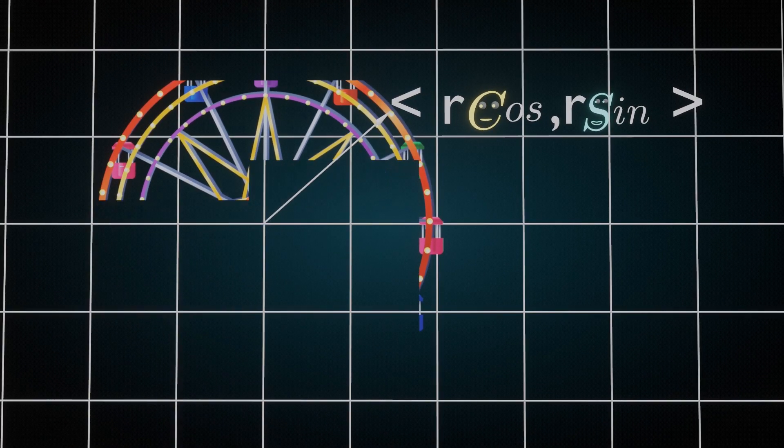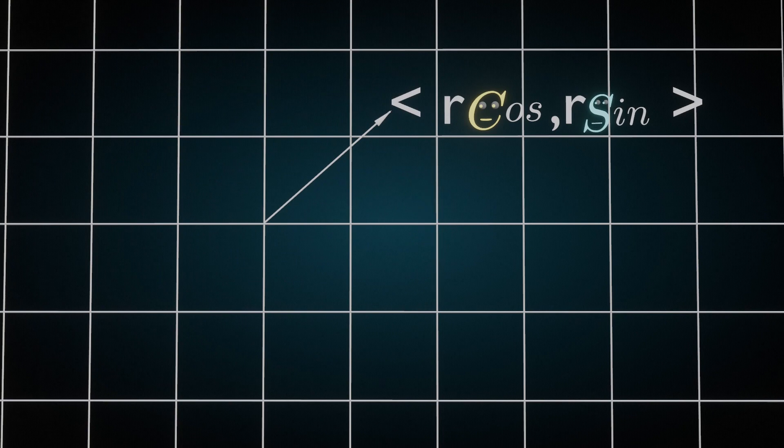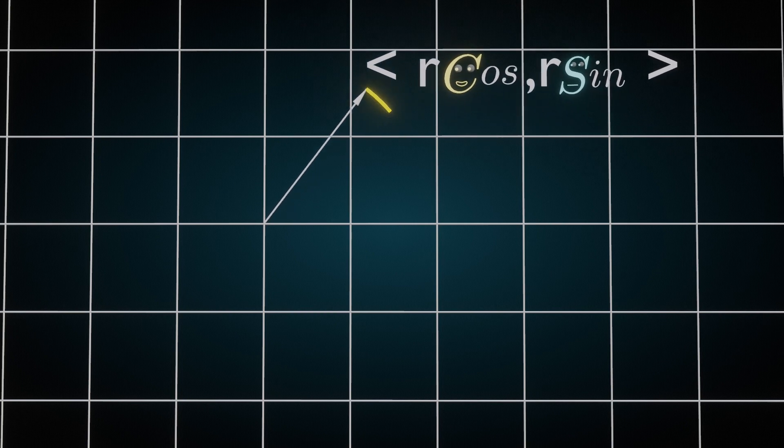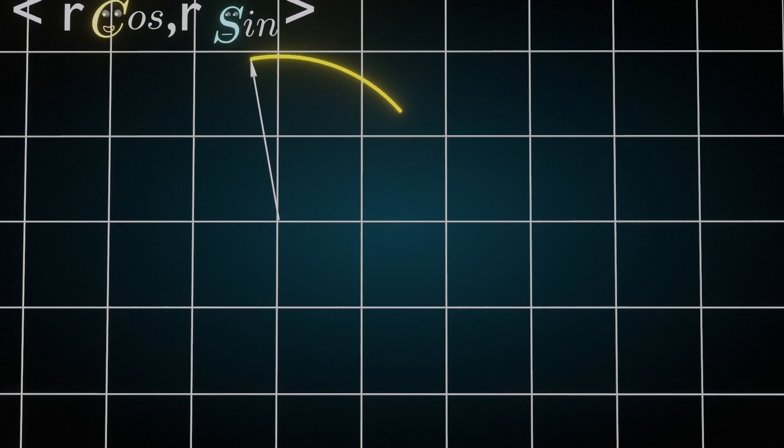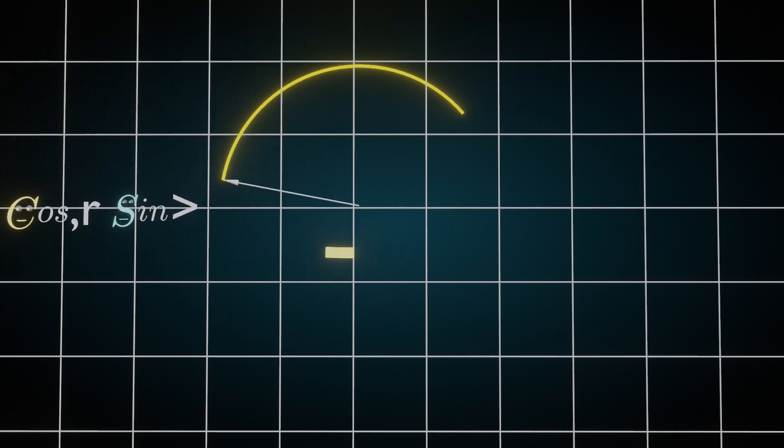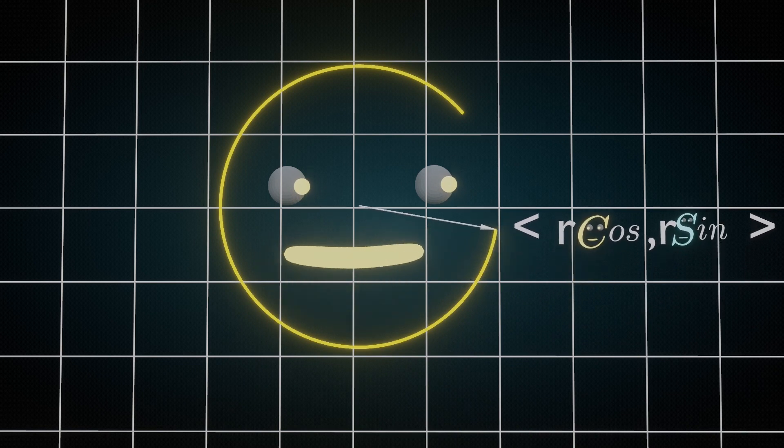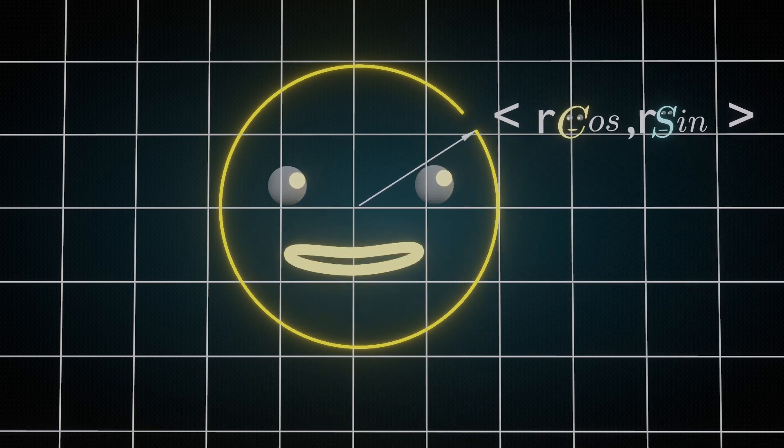Wait a minute! It's a trap! This is not a ferris wheel! It's a Cartesian coordinate system! Yes, and we are not riding! We are making a circle! Welcome back, kids! This time you won't escape me!